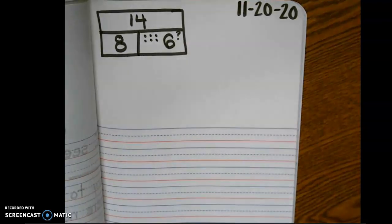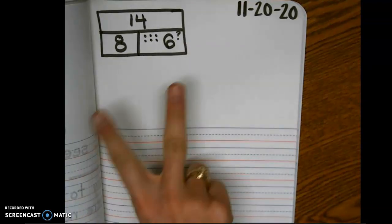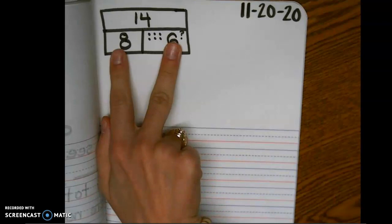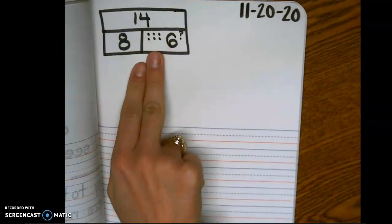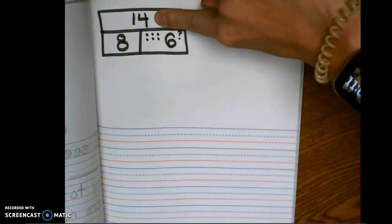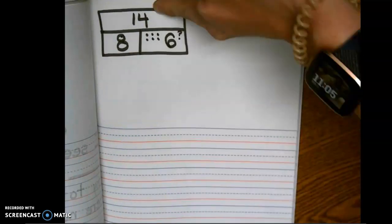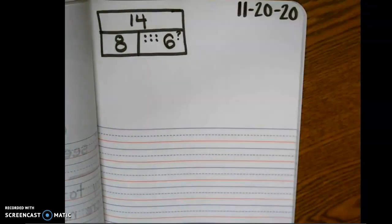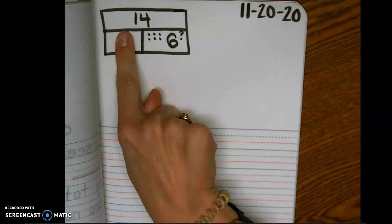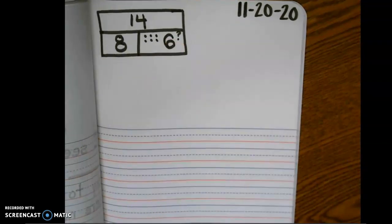So now we have a fact family. I want us to write our two addition sentences where we add both of our parts to equal our whole, and then I want us to write our two subtraction sentences where we start with our whole, take away a part, and it equals the missing part.